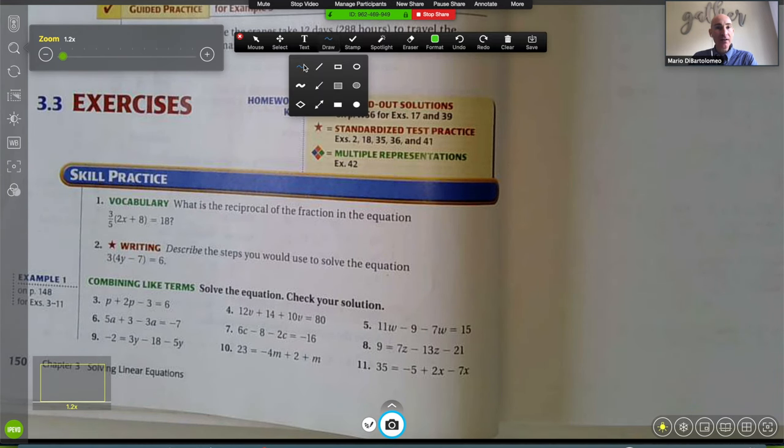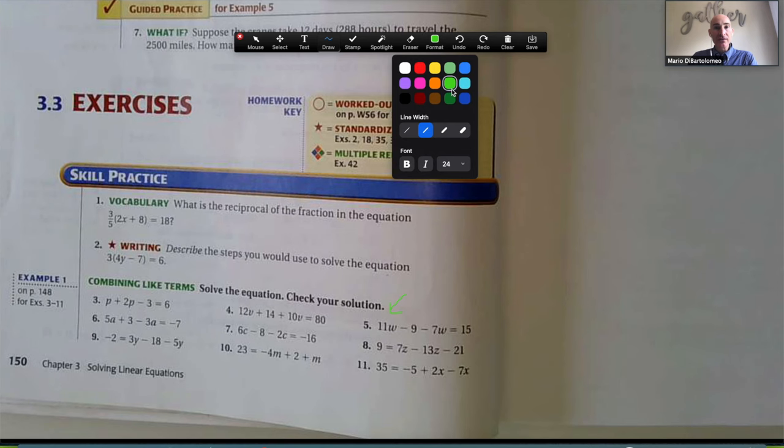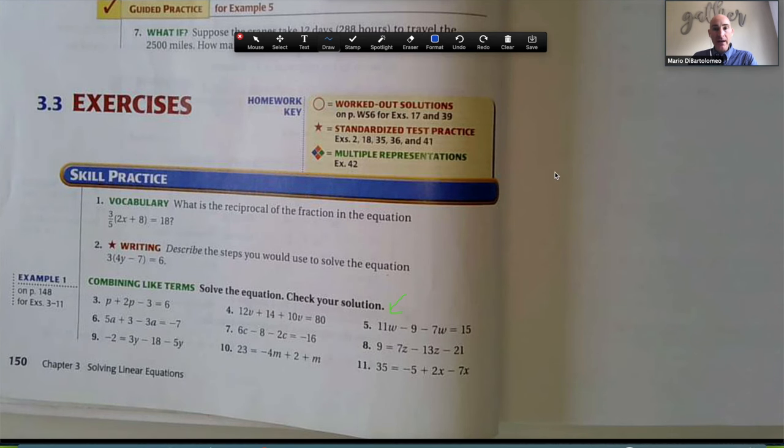Now let's go ahead to draw. And let's say, okay, let's try number five. So let's go ahead and select a different color. And over here on the side, I'm just going to say, all right, let's write the equation. We've got 11w minus 9 minus 7w equals 15. And then you can say to your student, okay, what's the first step here? What would you do?